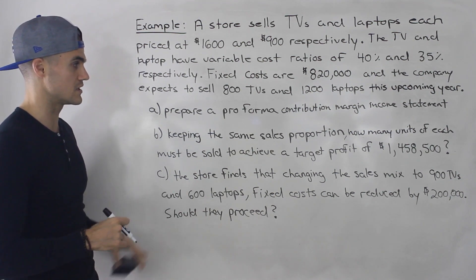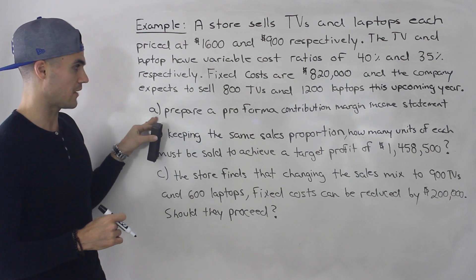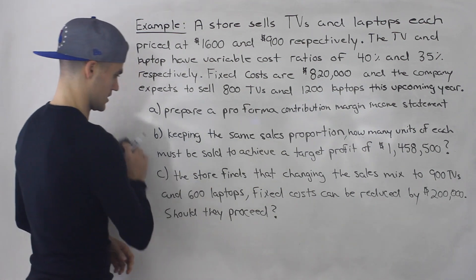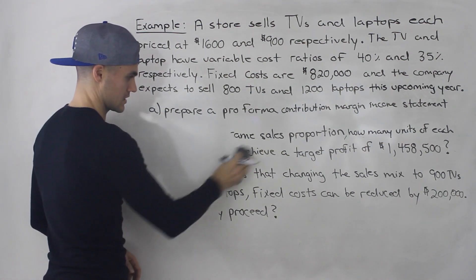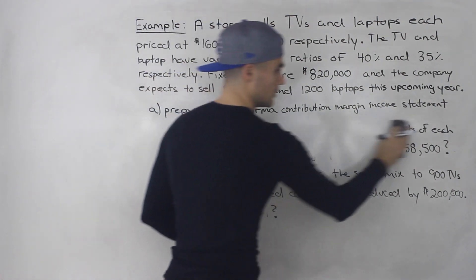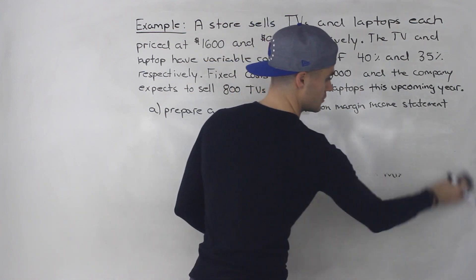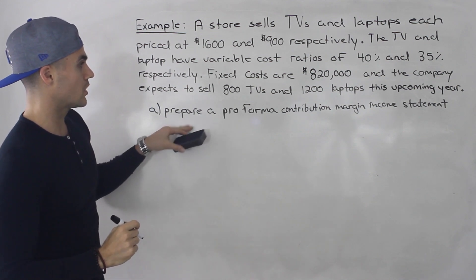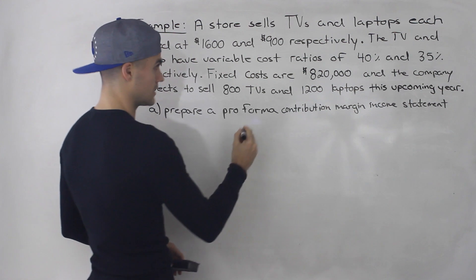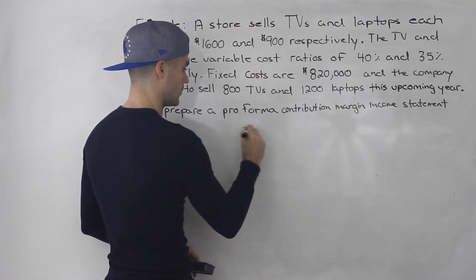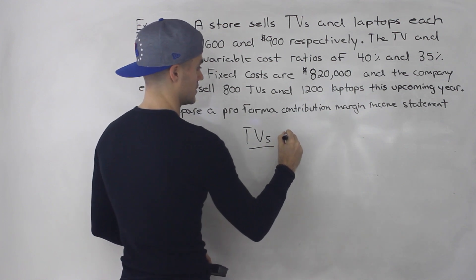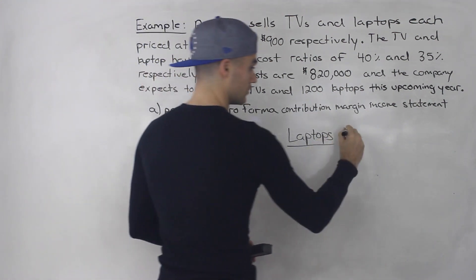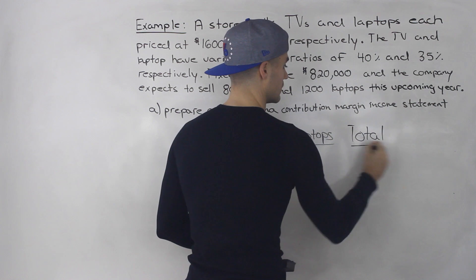We have three parts to this question. Part A, we need to prepare a pro forma contribution margin income statement. For this company with two products, I'm going to create two columns — one for the TVs and one for the laptops — and then total the numbers for the company as a whole.